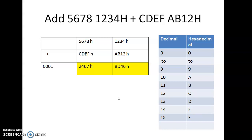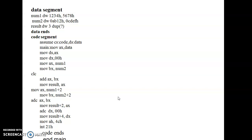Now for writing the program for this addition, we have two segments. One is called the data segment and the other is called the code segment. In the data segment we declare the input and output variables, whereas in the code segment we give the actual instructions to be executed. The objective is to add two 32-bit numbers.